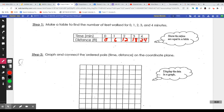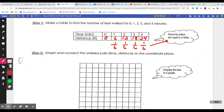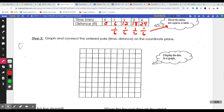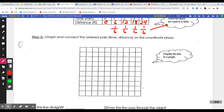Now, obviously from the last lesson, we know this is proportional because if we start reducing this, these all reduce to a sixth, right? So we know it's proportional, but let's just look at see what the graph looks like. Alright, so graph and connect the ordered pairs, time and distance, on the coordinate plane.